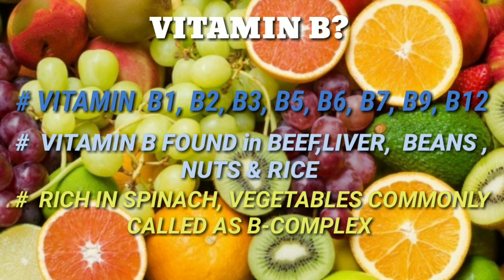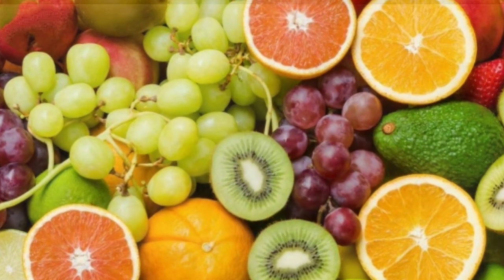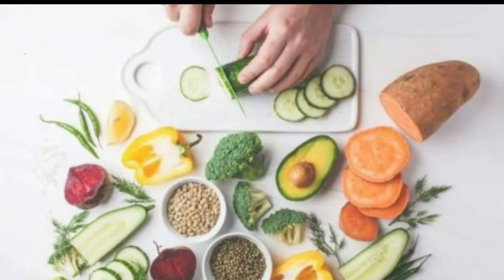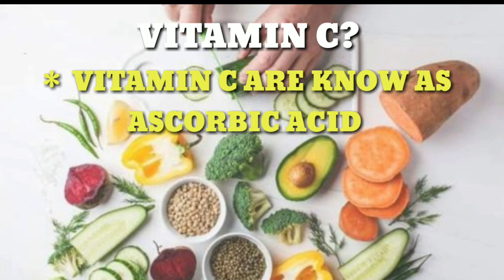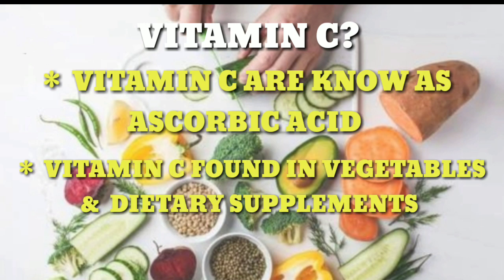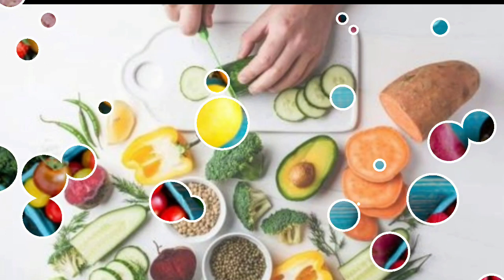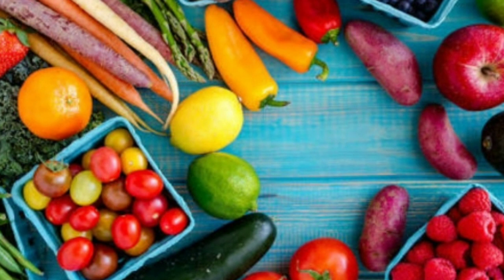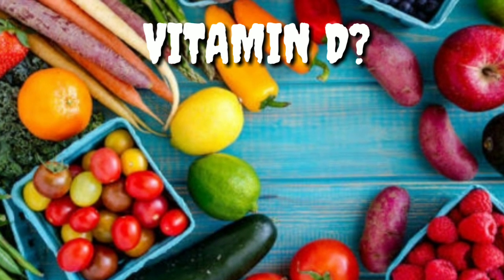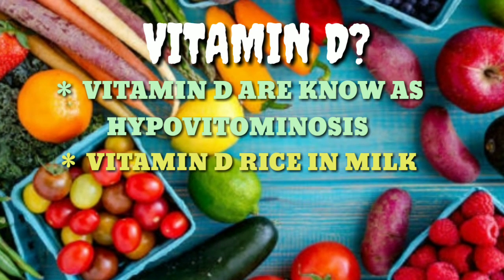Vitamin B is found in beef liver, beans, nuts, and rice. It is also rich in spinach and other vegetables. The B vitamins are commonly called B complex. Vitamin C is also known as ascorbic acid, and is found in vegetables and dietary supplements.